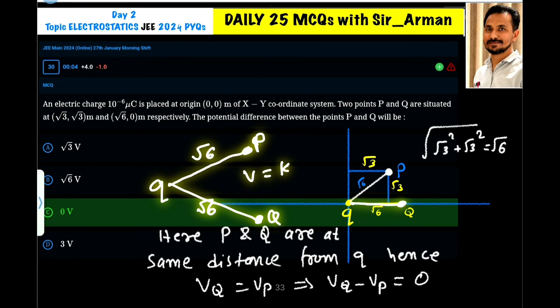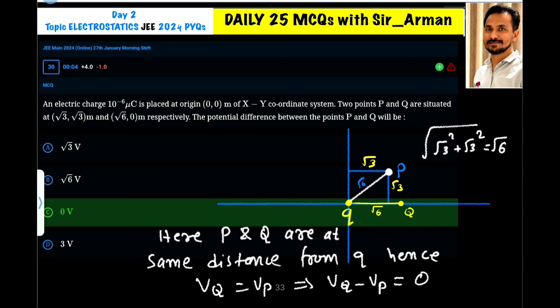The electric potential is given by equation V = kq/r. Since both points are at the same distance, the electric potential is the same. Point P and Q are at the same distance from q, so the potential at point Q equals the potential at point P. Hence, the potential difference between these two points is zero.